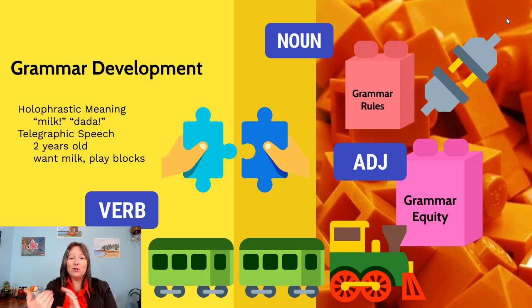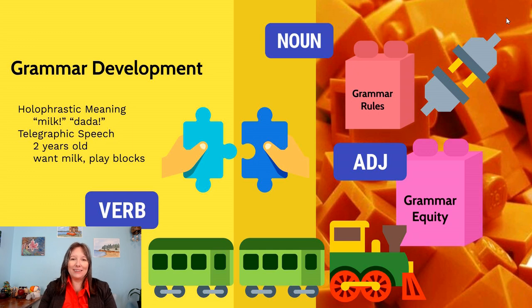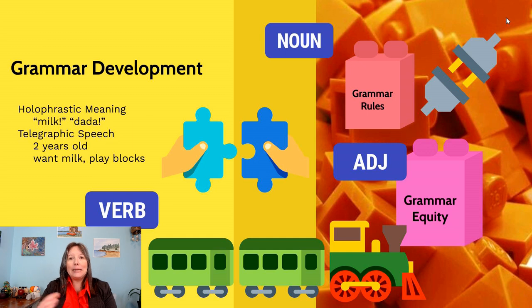Telegraphic speech is when we use more than one word but still the bare minimum — there are no pronouns, no prepositions, no conjunctions. So we might say 'want milk' instead of 'I would like some milk, please,' or 'play blocks' instead of 'I like to play blocks.' We're missing several parts of speech.